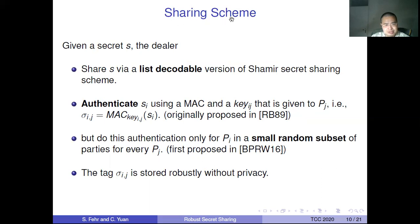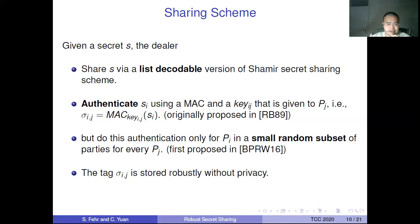Let's take a review of our previous approach, because we reuse some algorithms from it. In our previous sharing scheme, given a secret, we do the following: first, share it via list-decodable version of the Shamir secret scheme — instead of the classic Shamir scheme, we use a folded Reed-Solomon code to achieve list-decodability. Then we authenticate each share SI using a MAC. But we don't authenticate all other parties' shares for each party, as that incurs very large overhead. Instead, for each party, we only authenticate a small random subset of parties, which keeps the share size small. We need a random verification graph to represent this authentication relation.